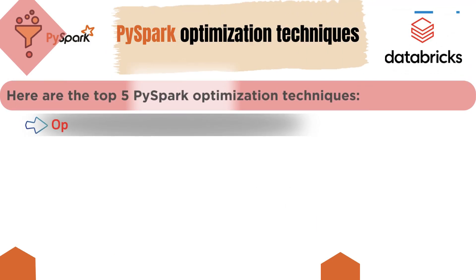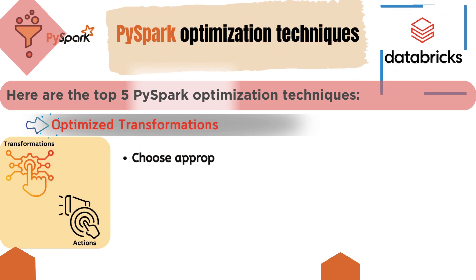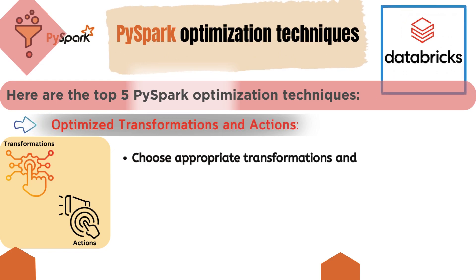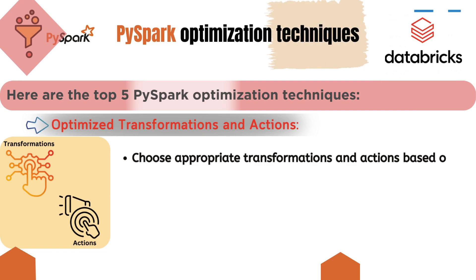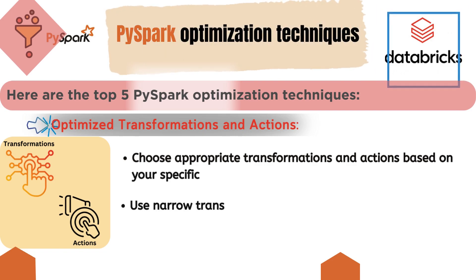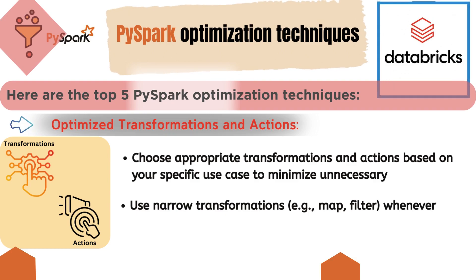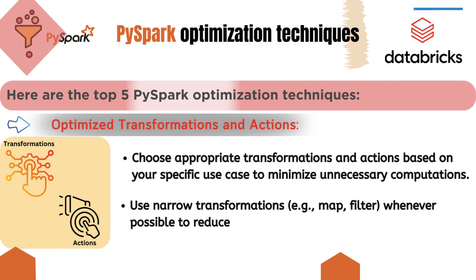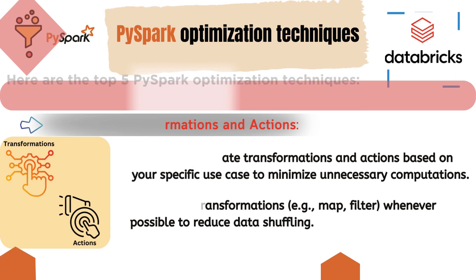Fourth, optimize transformations and actions. Choose appropriate transformations and actions based on your specific use case to minimize unnecessary computations. Use narrow transformations such as map and filter whenever possible to reduce data shuffling.